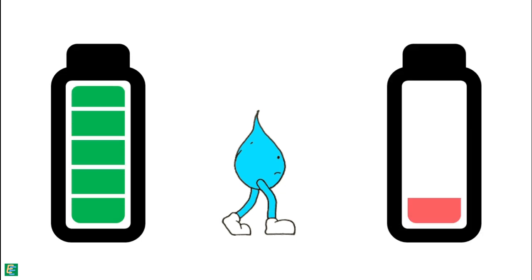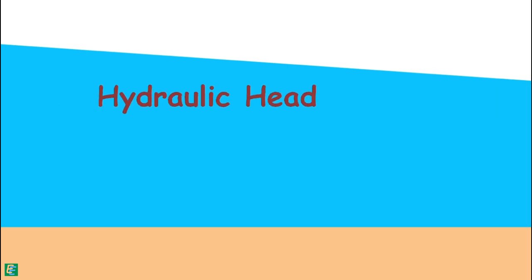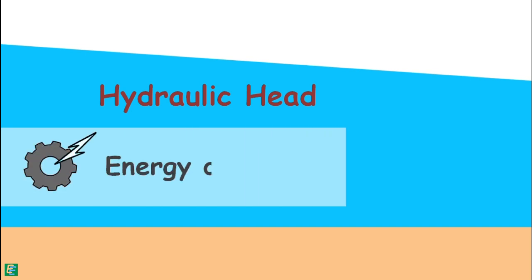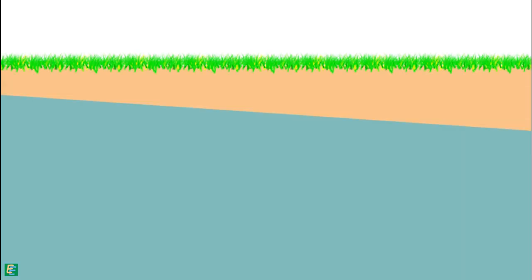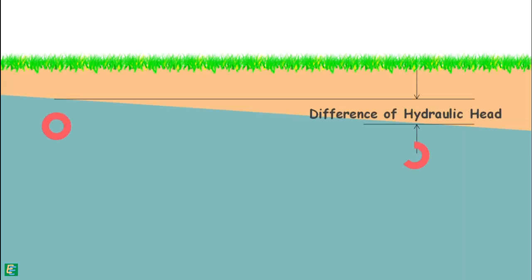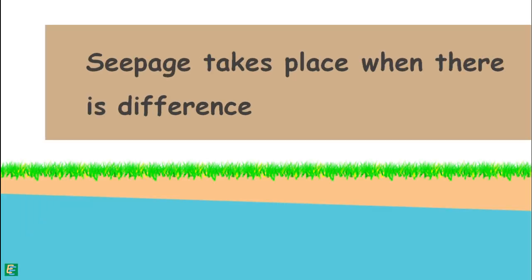Water moves from a high energy state to a low energy state, and in the case of water these energy states are represented as hydraulic heads. The hydraulic head is the amount of mechanical energy or liquid pressure available at any point in the water above the datum. For flow of water to take place in the soil, there should be a difference of hydraulic head between two points, and water flows from high hydraulic head to low hydraulic head. Hence, seepage takes place when there is a difference of hydraulic head.